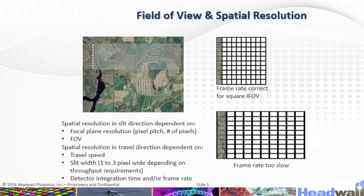Spatial resolution in the slit direction depends on the focal plane resolution, pixel pitch, and number of pixels in the field of view. Spatial resolution in the travel direction depends on travel speed, slit width (1 to 3 pixels), depending on throughput requirements, and the detector integration time or frame rate.